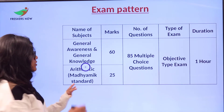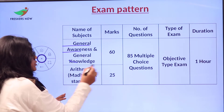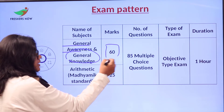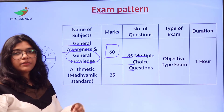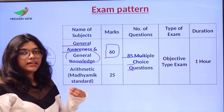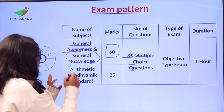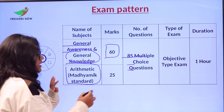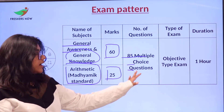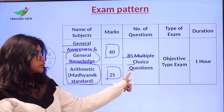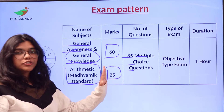The examination pattern is as follows: under the General Awareness and General Knowledge section, there are 60 marks with 85 multiple choice questions, objective type, completed within one hour. Under the same paper, you have the Arithmetic Madhyamik standard section which carries 25 marks, again with 85 multiple choice questions, objective type, and both sections are to be completed within a duration of one hour.